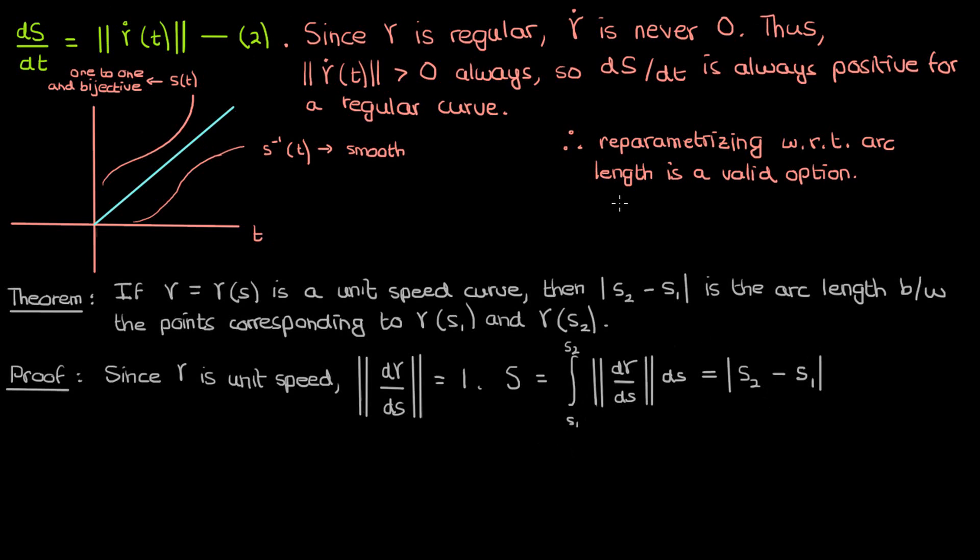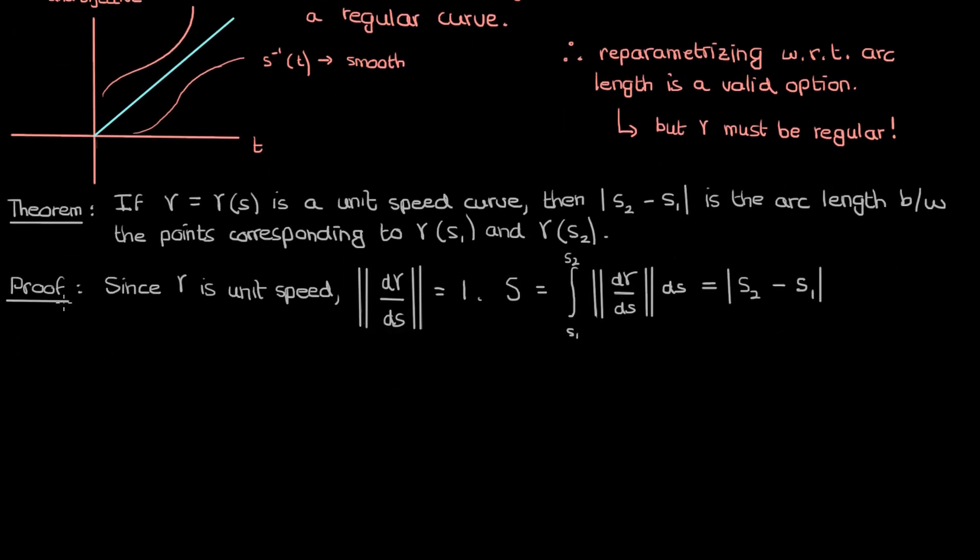The difference between the parameters on a unit speed curve corresponds to the arc length. From this it might make sense to say that if I have a unit speed curve, one way to ensure that a curve is unit speed is to have the parameter be the arc length. And this is why reparametrizing curves with respect to arc length is so important, because doing so is a good way of ensuring that you get a unit speed curve out of it. Of course, you can only do this reparametrization if your curve is regular. You wouldn't be able to ensure proper parametrization with respect to arc length if γ wasn't regular.